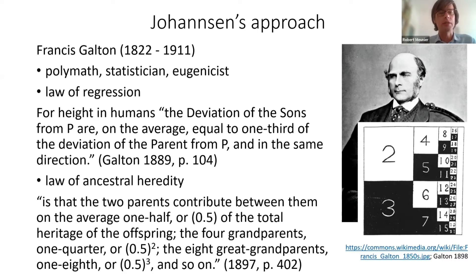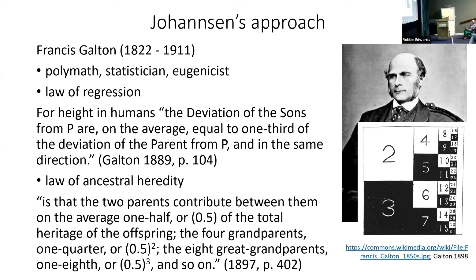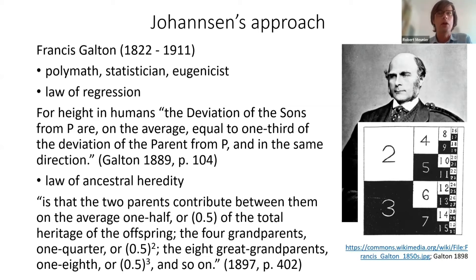Regression expresses that the offspring doesn't inherit the full extent of the parent's deviation. But from an evolutionary point of view there is still a form of progress, because the offspring doesn't fall entirely back to the mean of the population, so selection can have an effect. The law of ancestral heredity explains this: the two parents contribute on average one half of the total heritage of the offspring; grandparents contribute one quarter; great-grandparents one eighth; and so on. Even if parents deviate quite a lot, all the inheritance from previous ancestors brings mediocrity into the offspring, and therefore you have this regression.